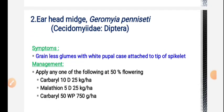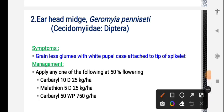Next is ear head midge. Symptoms: glumes and grain heads are affected; midge pupal cases are visible and help identify the pest. The glumes become chaffy and grains are not properly filled. Management: use carbaryl, malathion, or carbaryl dust, and wettable powder formulations.